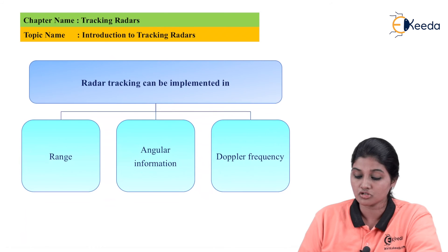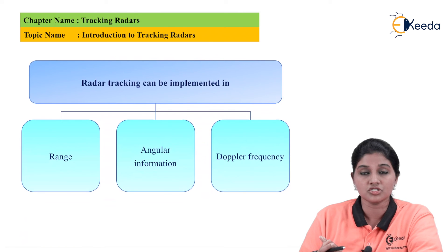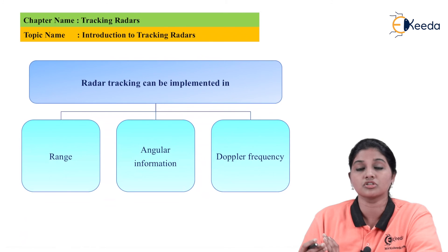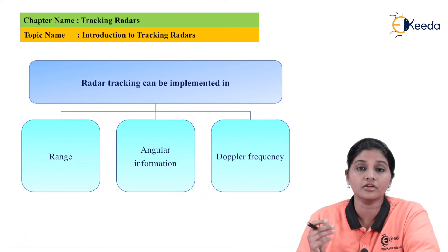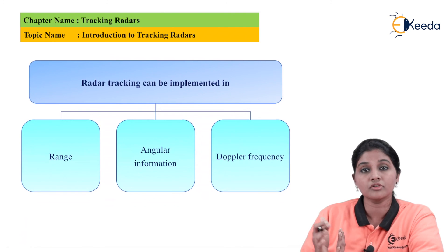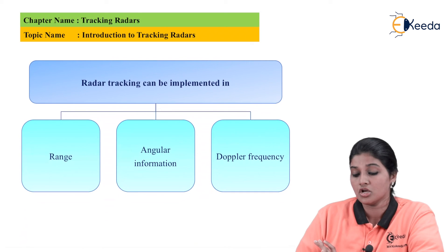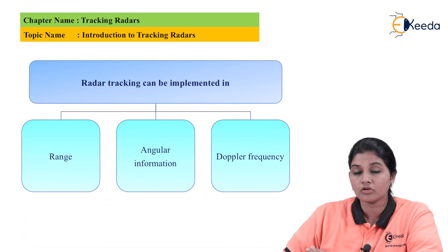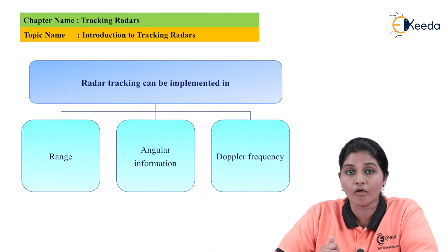The second question is: radar tracking can be implemented in — and the options are range, angular information, and Doppler frequency. We can use various parameters for continuous tracking, which include range, Doppler frequency shift, azimuth angle, and elevation angle. The answer is option A — all of the above parameters are applicable.